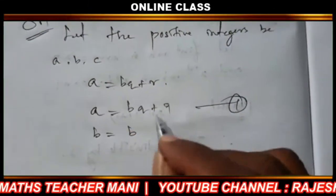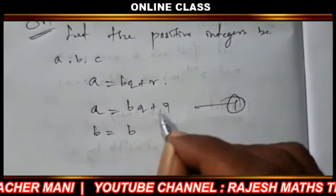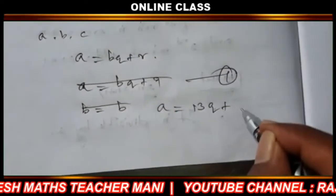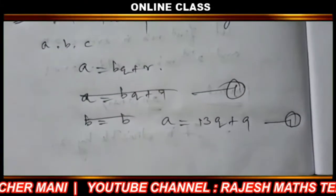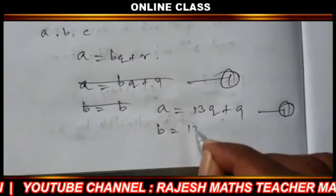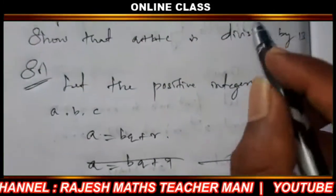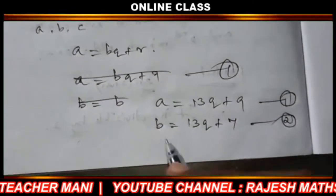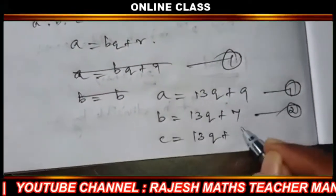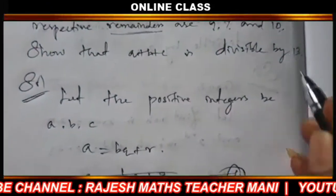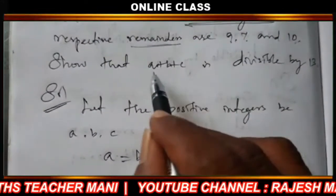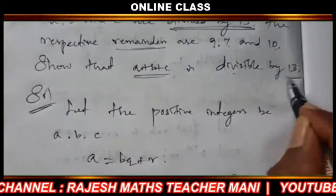And c has remainder 10. So equation 1: a is equal to 13q plus 9. Equation 2: b is equal to 13q plus 7. Equation 3: c is equal to 13q plus 10.